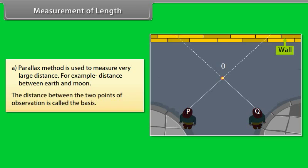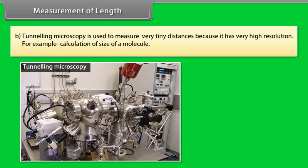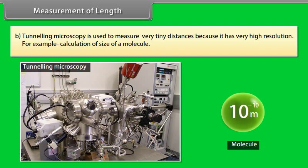The distance between P and Q is called basis. Tunneling microscopy is used to measure very tiny distances because it has very high resolution, for example, calculation of size of a molecule.